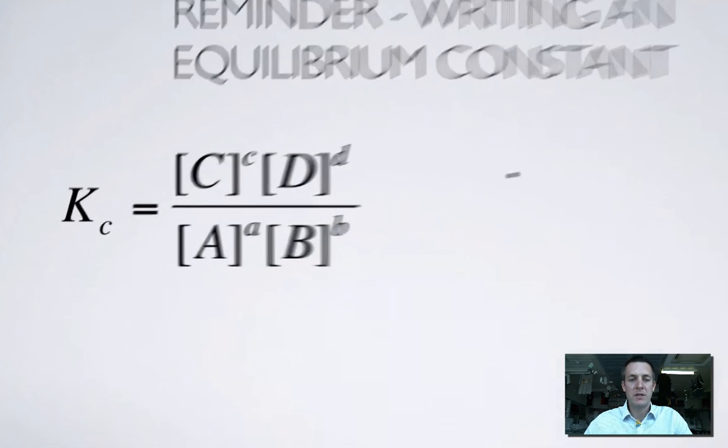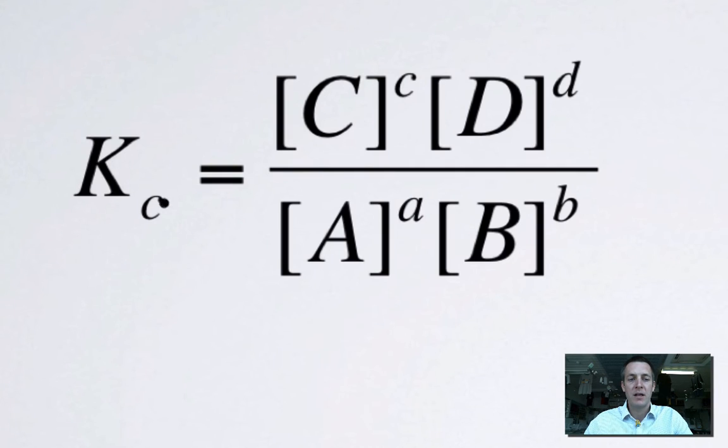So you might remember this thing called Kc. Now Kc was an equilibrium constant, K, measured in terms of concentrations.